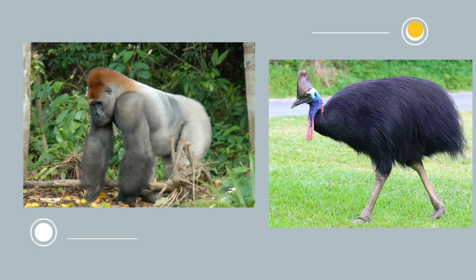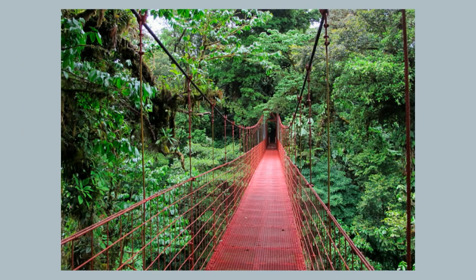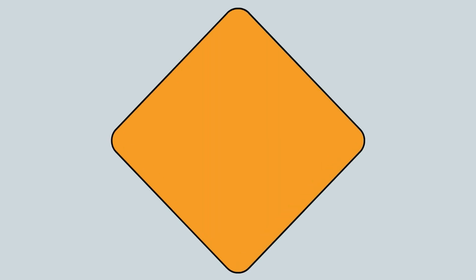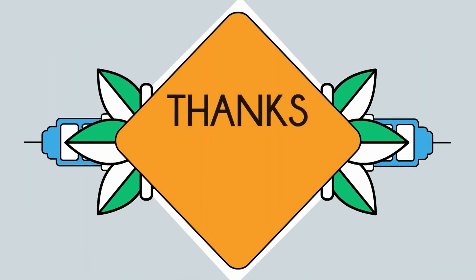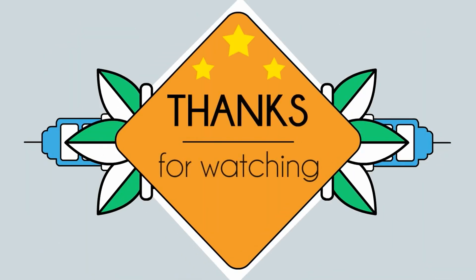So in summary, the tropical rainforest is found near the equator, it is hot, receives lots of rain, and has the most diversity of plants and animals of all the biomes. Thanks for watching. MooMooMath uploads a new math and science video every day. Please subscribe and share.